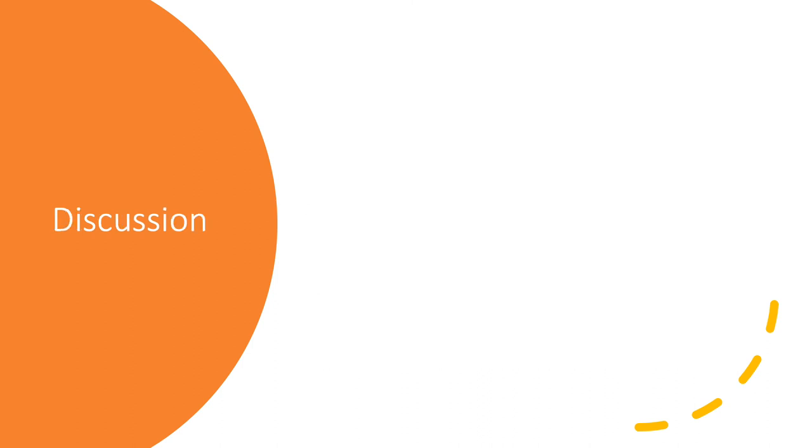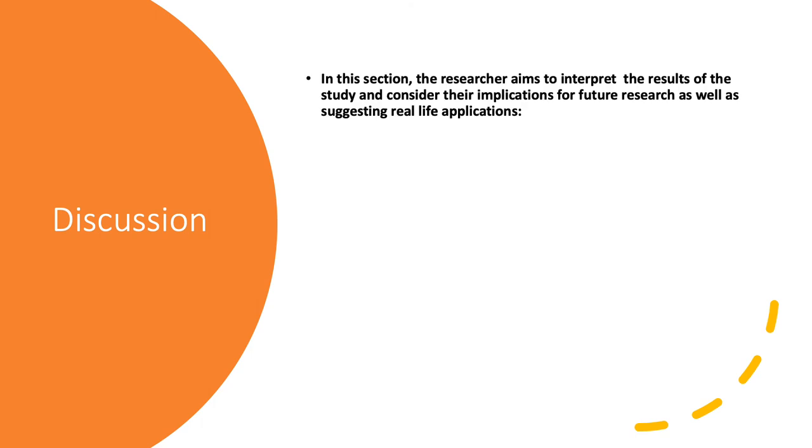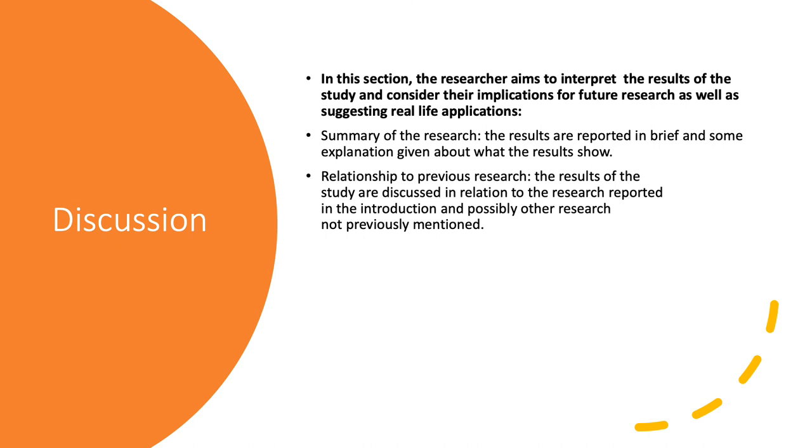After our results, what we have to do is interpret these results. What does it mean? If you find a significant difference in short-term memory capacity between males and females, what does that mean? What are the implications for future research of this? And what are the real-life applications? So, firstly, we summarise the research and give an explanation about what the results have shown. And then we relate it back to the previous research that we've mentioned. So, does what we've just studied relate to Miller or Jacobs in any way? Does it contradict their findings? Does it support their findings?